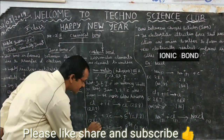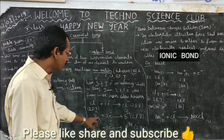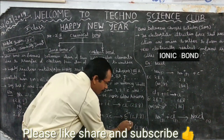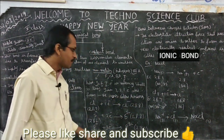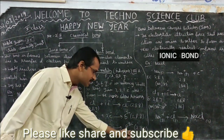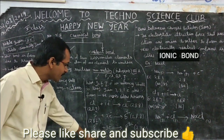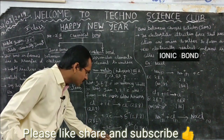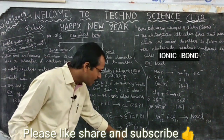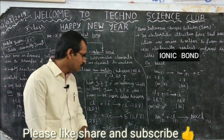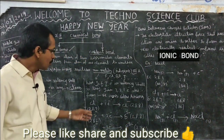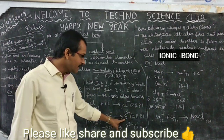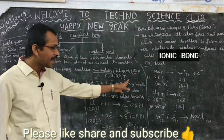For example, sulfur has an electronic configuration of 2, 8, 6. If it gains two electrons it achieves 2, 8, 8 — a stable configuration — and forms the S2− anion. Phosphorus has an electronic configuration of 2, 8, 5. It needs three more electrons to become stable, so it gains three electrons and forms the P3− anion. So to get stability: chlorine gains one electron (Cl−), sulfur gains two electrons (S2−), and phosphorus gains three electrons (P3−).